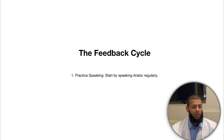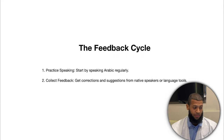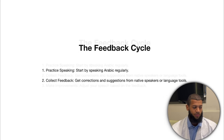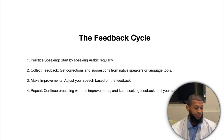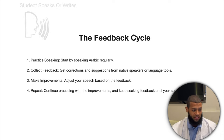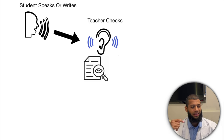The feedback cycle works in four steps. First, practice speaking — just put it into practice, whether speaking or writing, and start speaking Arabic regularly. Second, collect feedback — get corrections and suggestions from native speakers, people who have learned Arabic, or language tools. Third, make improvements — adjust your speech based on the feedback you receive and say it correctly next time. Fourth, repeat — continue practicing with the improvements and keep seeking feedback until your speech is perfected.